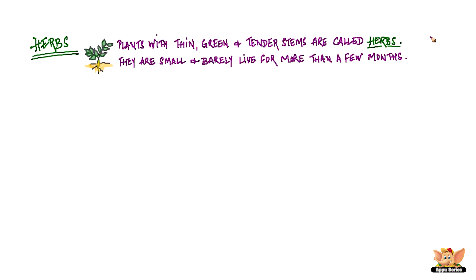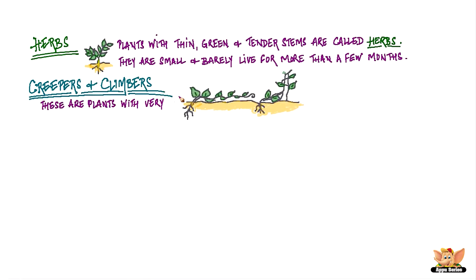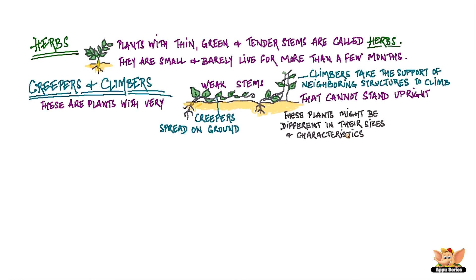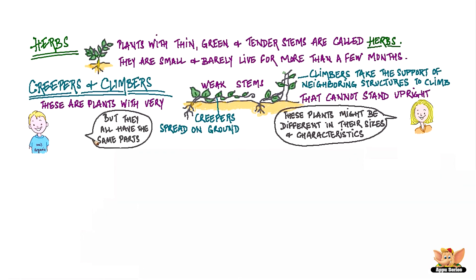Creepers and climbers are plants with very weak stems that cannot stand upright. Creepers spread on the ground, while climbers take the support of neighboring structures to climb. Can you think of some plants in your neighborhood that fall under these categories? These plants might be different in their sizes and characteristics, but they all have the same parts.